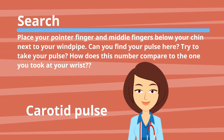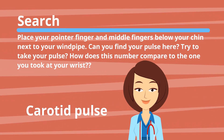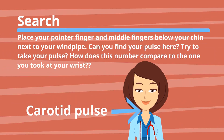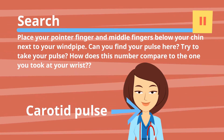Now, place your pointer finger and middle fingers below your chin, next to your windpipe. Can you find your pulse here? Try to take your pulse. How does this number compare to the one you took at your wrist?